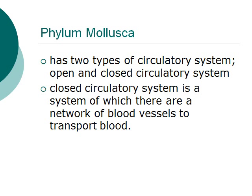The organisms within this phylum can be split into two types of circulatory system: the open and the closed circulatory system. The closed circulatory system is a system in which there is a network of blood vessels to transport blood. It is called closed because the blood is enclosed within the blood vessels while being transported to the various parts of the organism's body.